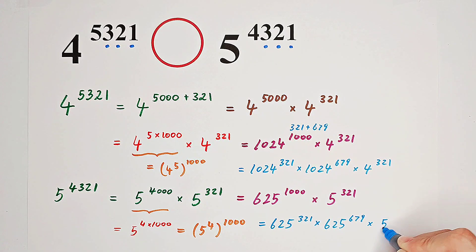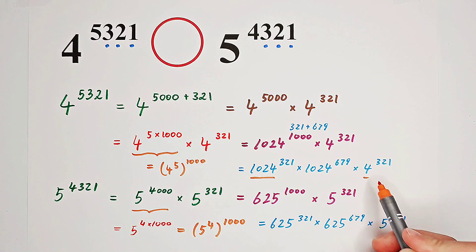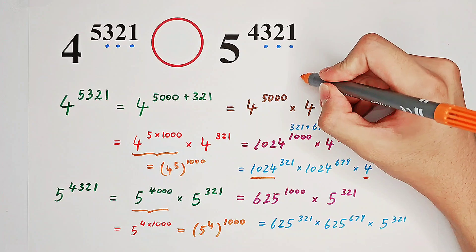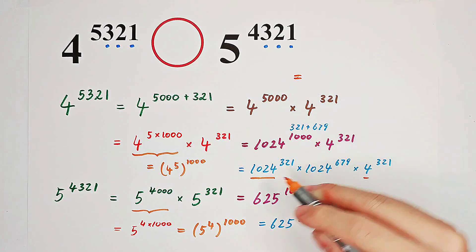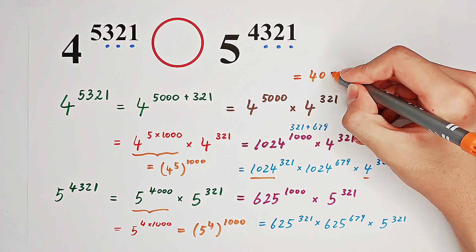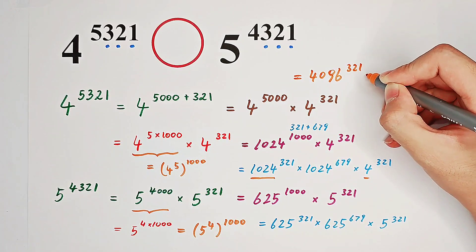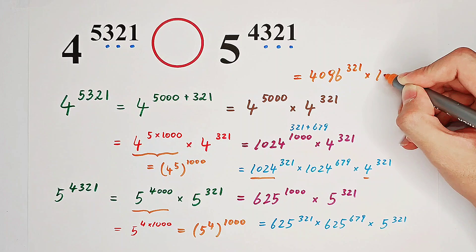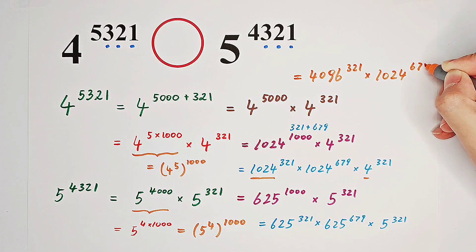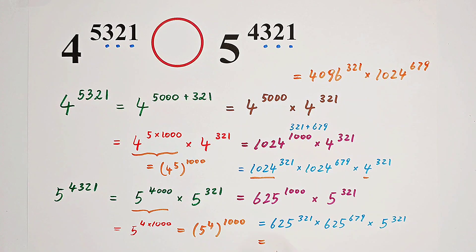It's going to be 625 to the power of 321, then times 625, then to the power of 679, then times 5 to the power of 321. Now we multiply 1,024 and 4 together. So here we will get 1,024 times 4 is 4,096. So it's going to be 4,096 to the power of 321, then times 1,024 to the power of 679. And here, if we multiply 625 with 5 together, the result is going to be 3,125 to the power of 321.